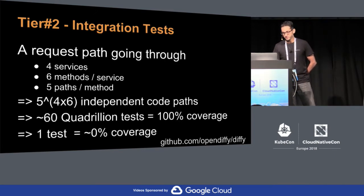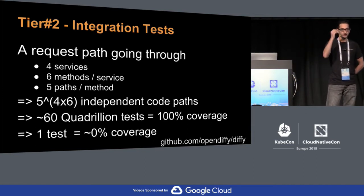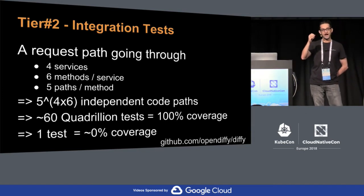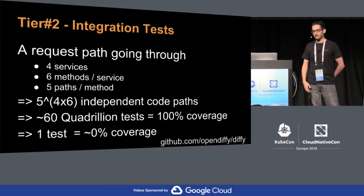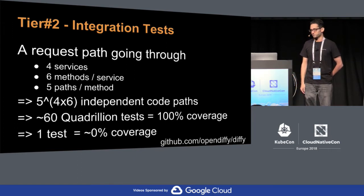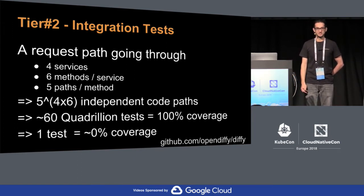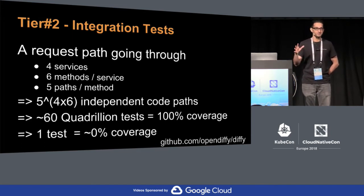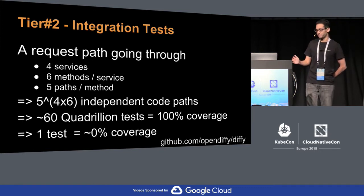Let's take it a step further. At the integration test layer, when you're looking at the request path going through four such services, each service having six methods, each method having five independent code paths, the problem just explodes — 60 quadrillion tests to write to get 100% coverage. Even if you put a QA army behind it, this is just not scalable whatsoever.